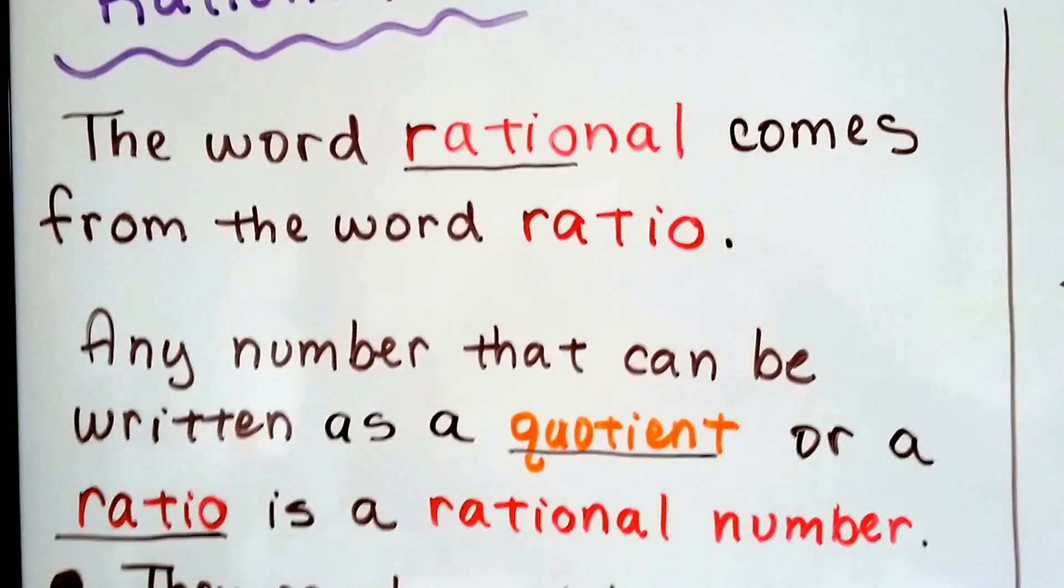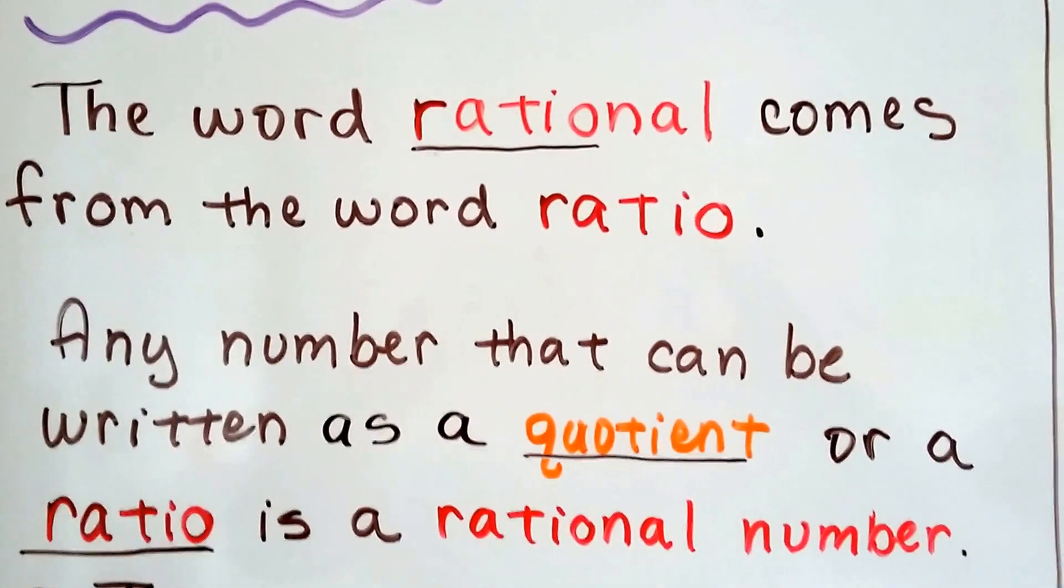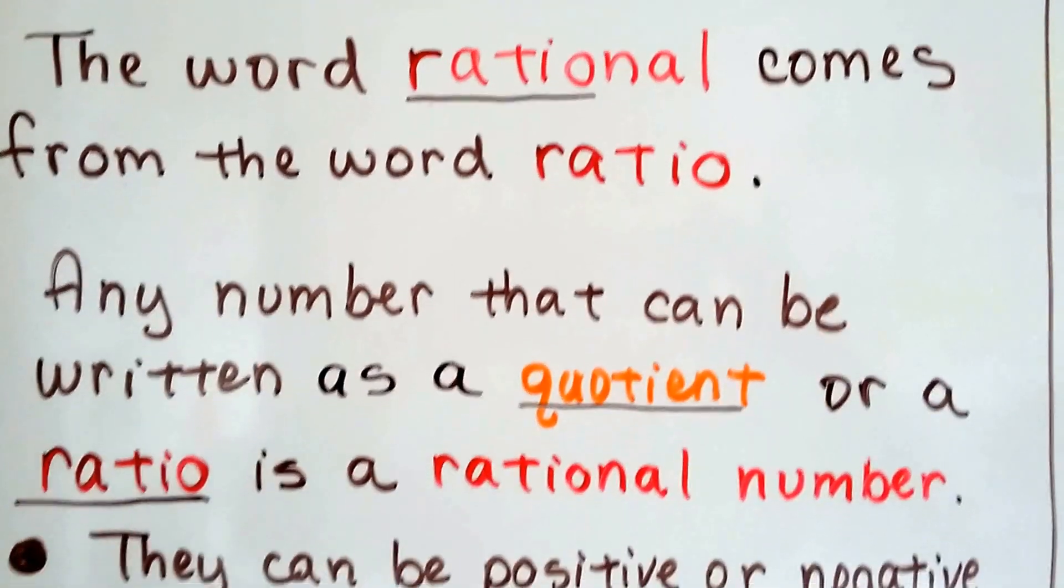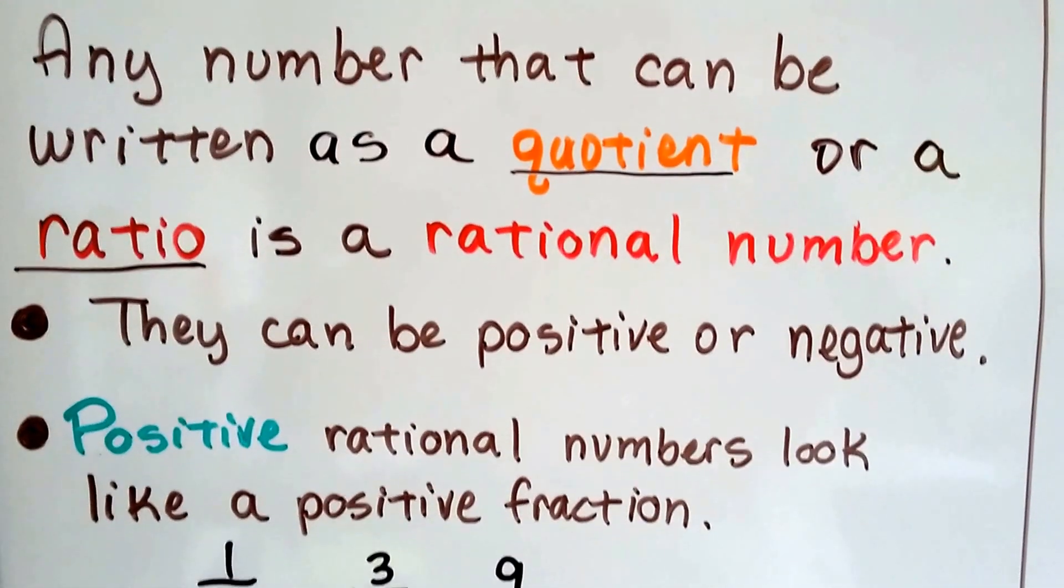So the word rational comes from the word ratio. We can actually see the word ratio underlined in the word rational, can't we? And any number that can be written as a quotient or a ratio is a rational number.